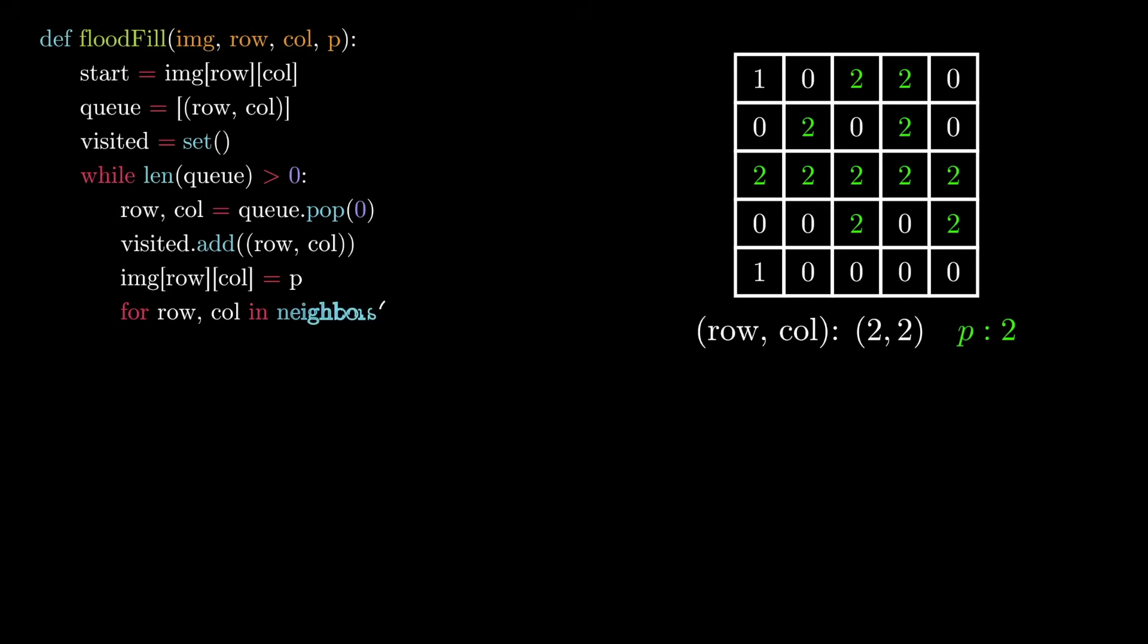Then, what we will do is take each row and column location from the neighbors of the current row and column location and if that location has not been visited, we will add it to the queue. This is again following the standard BFS logic and at the end we will return the transformed image. The only thing we have to figure out now is how to implement this neighbors function.